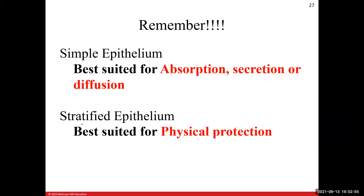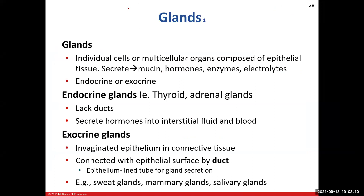Important summary: one cell layer thick is simple epithelium — best for absorption, secretion, or diffusion. Two or more layers is stratified — best for physical protection.